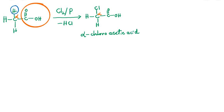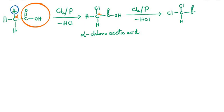If alpha-chloroacetic acid is further treated with another molecule of chlorine in the presence of red phosphorus, another molecule of HCl is lost and we get a di-substitution on the alpha carbon atom. This compound is called alpha-dichloroacetic acid.